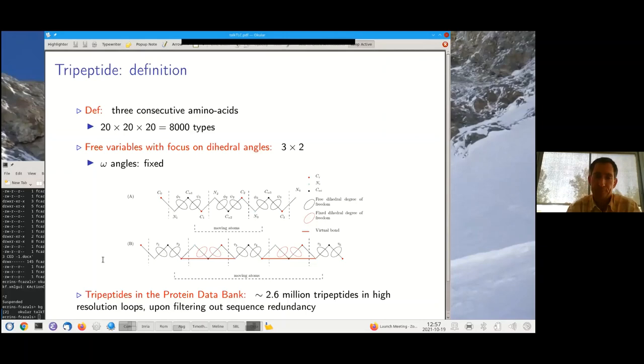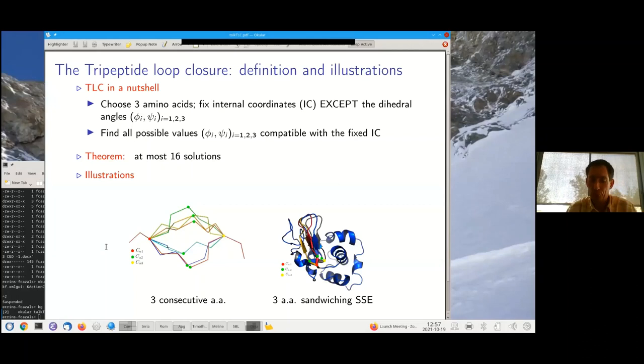So why are tripeptides interesting to deform or to predict conformational changes of proteins? Because there is a non-trivial theorem from algebra which I'm going to try to specify in simple words. So again, we are playing this game where we can change dihedral angles without changing valence angles and bond length. And now, if I allow myself to change exactly six dihedral angles within a tripeptide, it turns out that the set of conformations of the backbone where the six dihedral angles are free to move, but all the remaining internal coordinates are fixed, the set of solution is discrete, meaning finite, and there are at most 16 solutions.